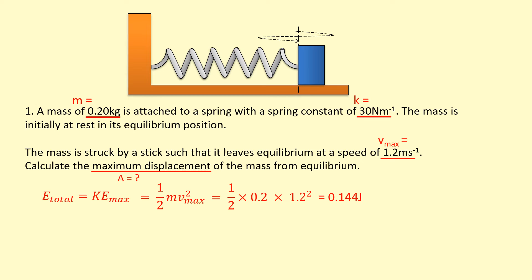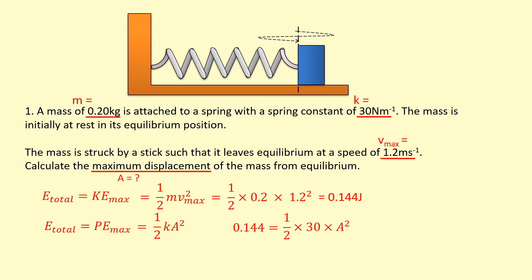We want to calculate the maximum displacement, which is the amplitude. At maximum displacement, all kinetic energy has converted to elastic potential energy, so: total energy = ½ka². Setting 0.144 = ½ × 30 × a² and rearranging gives an amplitude of approximately 0.098 meters — the largest displacement from the equilibrium.